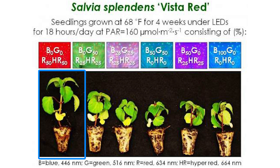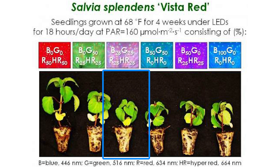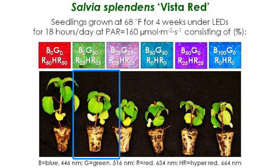As you can see, the plant grown under the red spectrum is tall and thin, whereas the plant grown under the all-blue spectrum is short but more full. The plant grown with an even spread of blue, green, red, and hyper red gets a result not too far off from the plant grown under all blue. But what's really interesting is the results of the plant grown under the green and red spread.